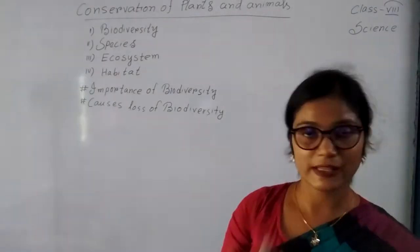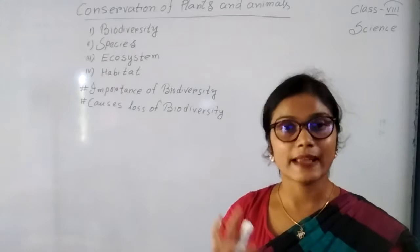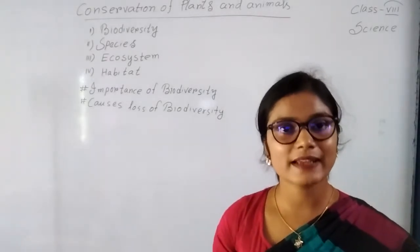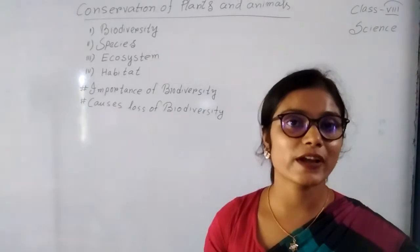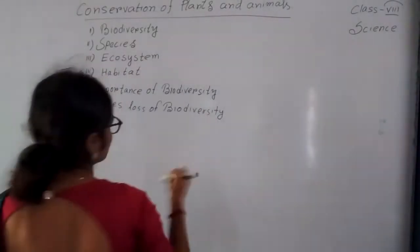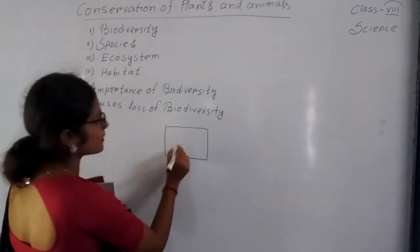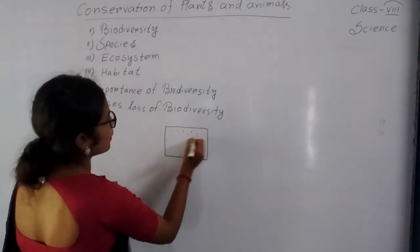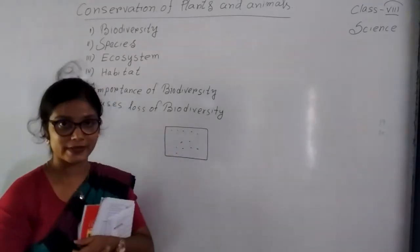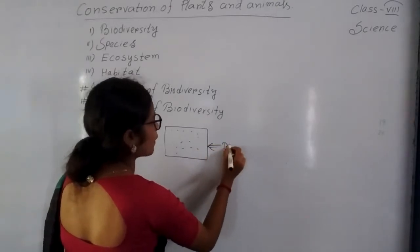The place in which plants, animals, and microorganisms all live together is known as biodiversity. Suppose this is one place — in this place, different types of animals, plants, and microorganisms are present. So this place is known as biodiversity.